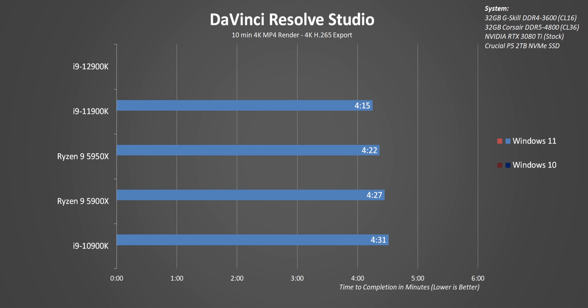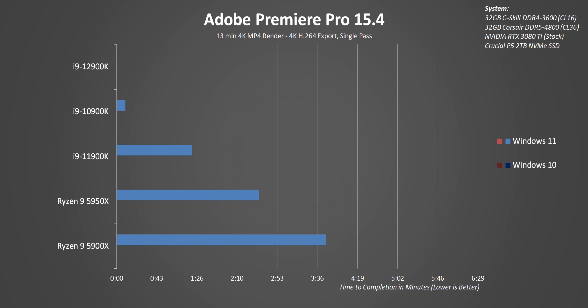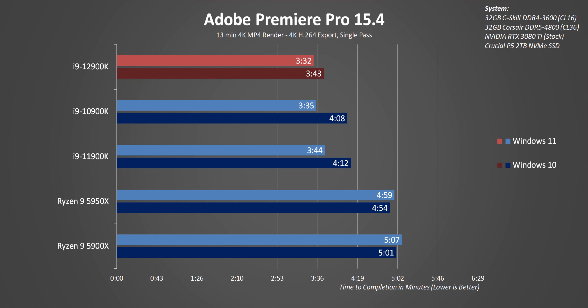Moving on to DaVinci Resolve, the 12900K once again takes the lead in Windows 11. Adding the Windows 10 results doesn't change that lead, but Alder Lake takes a little hit. Every other CPU except the 10900K gets a slight boost in performance on Windows 10. Moving on to Premiere, Intel can actually use its IGP or integrated graphics during the render. Alder Lake is best here thanks to the IGP, and look at how much Windows 11 has improved the integrated graphics performance — it also brings a huge boost to 10th and 11th generation Intel CPUs.